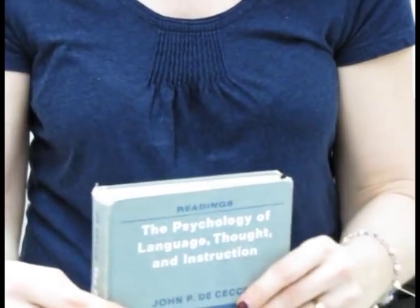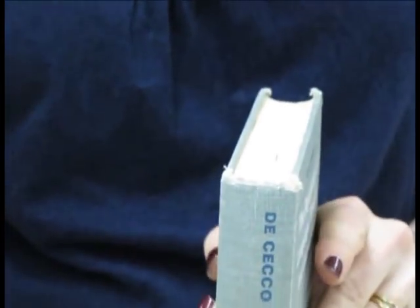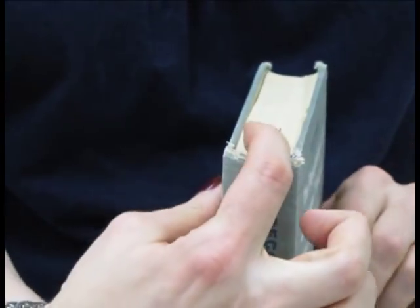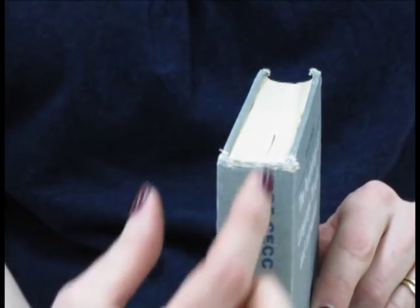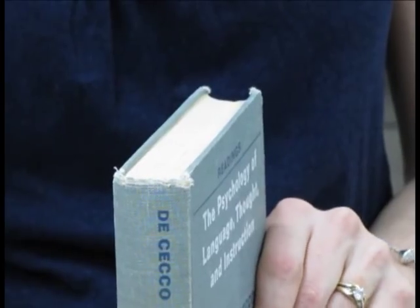Often when a library book is put on a shelf, patrons will come along and take it off the shelf by pulling at the top hinge. We have something that will fix that.